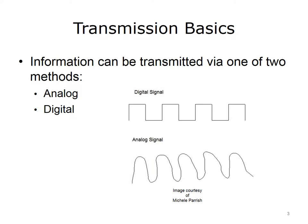First, we will cover some general terms that you need to know when dealing with networking. Information can be transmitted in one of two ways in a network: analog or digital. An analog signal is a continuous signal, and it is hard to distinguish each character. Examples of analog signals are voice, analog clock, and old analog TV signals. With digital signals, each character is very distinct. A computer uses digital signals — zeros and ones. Other examples are digital clocks and digital TVs.